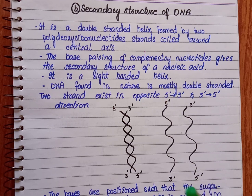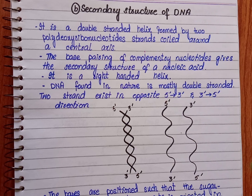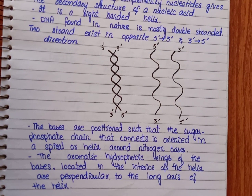The two strands are antiparallel — one strand runs in the 5' to 3' direction and the other in the 3' to 5' direction — coiled around each other to form the secondary structure of DNA. The bases present in these two strands form base pairing, positioned such that the sugar-phosphate chain is oriented in a spiral or helix around the nitrogenous bases. These bases are aromatic hydrophobic ring structures located in the helix, perpendicular to the long axis of the helix.